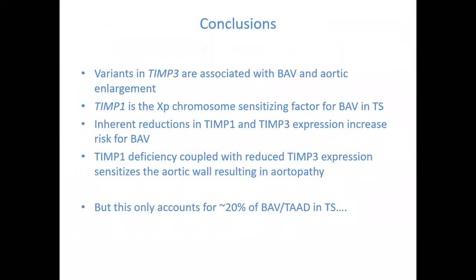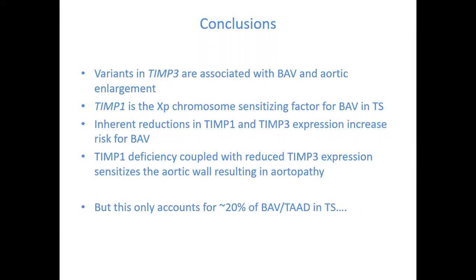To conclude this part: variants in TMP3 are associated with bicuspid aortic valve and aortic enlargement in Turner syndrome. TMP1 is the X chromosome sensitizing factor for bicuspid aortic valve in Turner syndrome. Inherent reductions in TMP1 and TMP3 expression increase risk for BAV, and TMP1 deficiency coupled with reduced TMP3 expression sensitizes the aortic wall. However, this only accounts for about 20% of BAV and aortic disease in Turner syndrome — the rate at which these TMP3 variants are inherited — so there must be more going on.